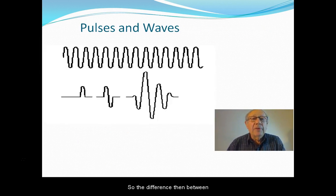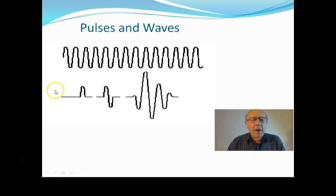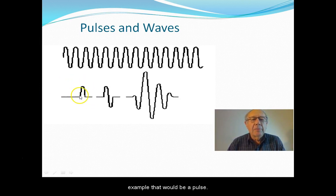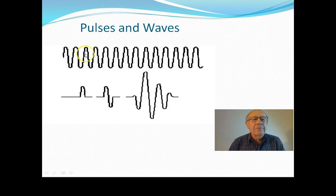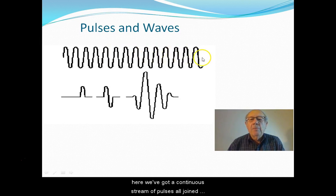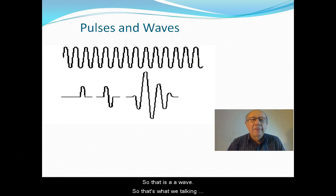So the difference then between pulses and waves. A pulse, in a sense, is part of a wave. One wavelength like this would be a pulse, or something like this — that's a pulse. Whereas here we've got a continuous stream of pulses all joined together, if you like — so that is a wave. That's what we're talking about when we're talking about pulses and waves.